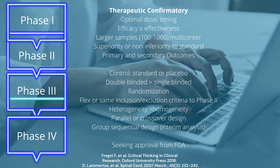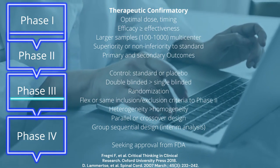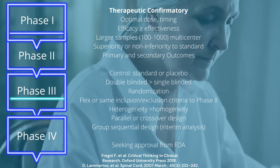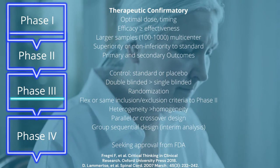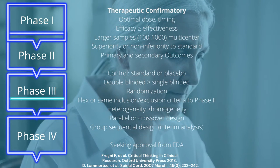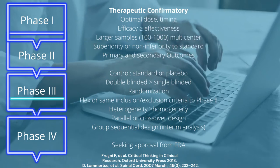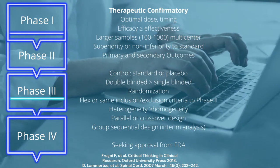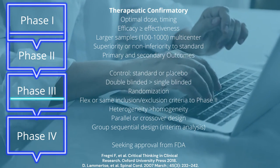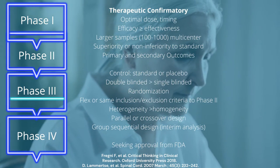Phase 3 confirms the results from Phase 2, with larger samples, and it's recommended to be a multi-center study, focusing on primary and secondary outcomes. Controls can be either standard treatment or placebo, and it's suggested to be double-blinded. Randomization is also suggested, with more flexibility in inclusion and exclusion criteria compared to Phase 2. The study design may be parallel or crossover, though in crossover design we must consider the carry-over effect and the wash-out period.